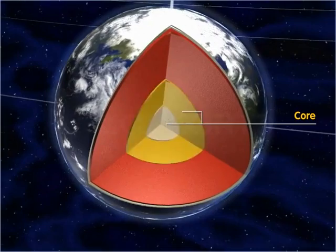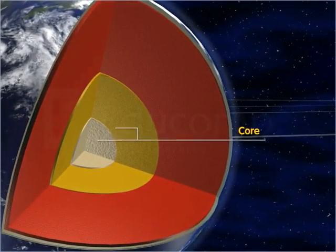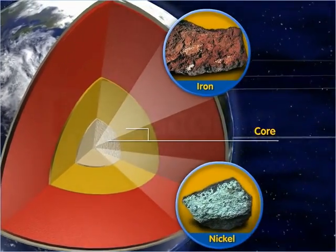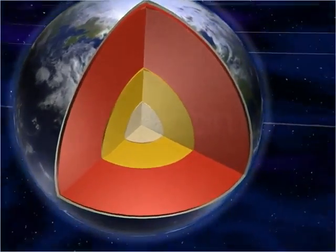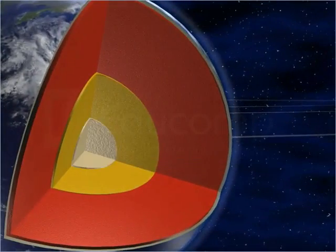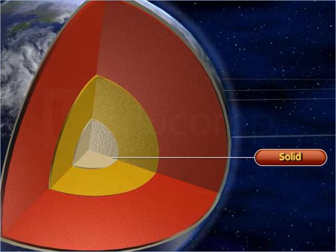Below the mantle is the core. It is the innermost part of the Earth, made up of mostly iron and nickel. The core is divided into two layers: the inner core and the outer core.